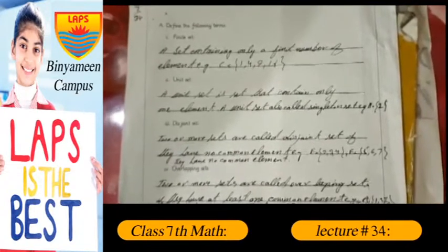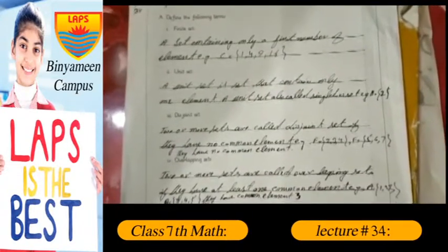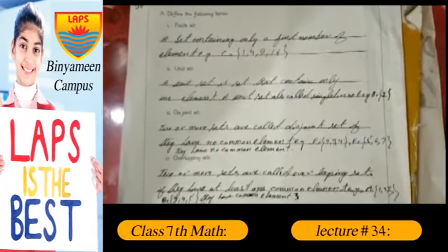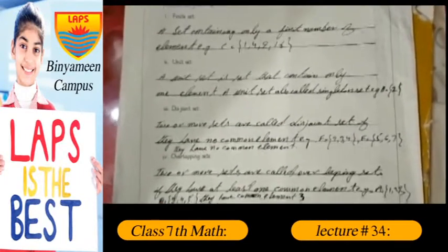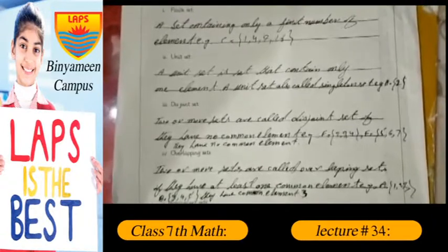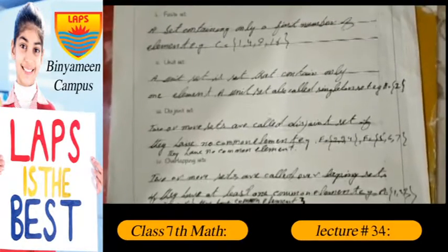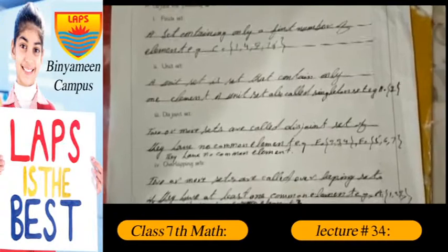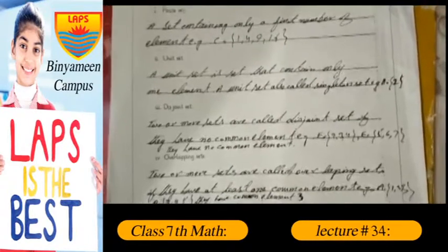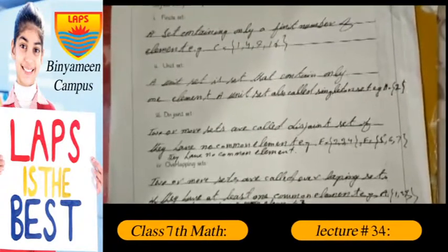Unit set: a unit set is a set that contains only one element. A unit set is also called a singleton. For example, set A has only element 2.